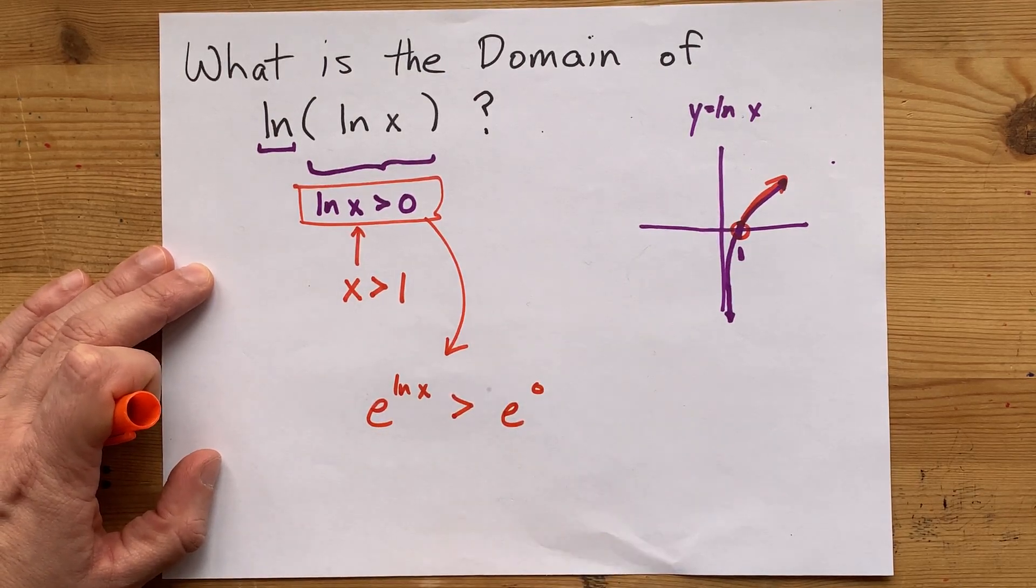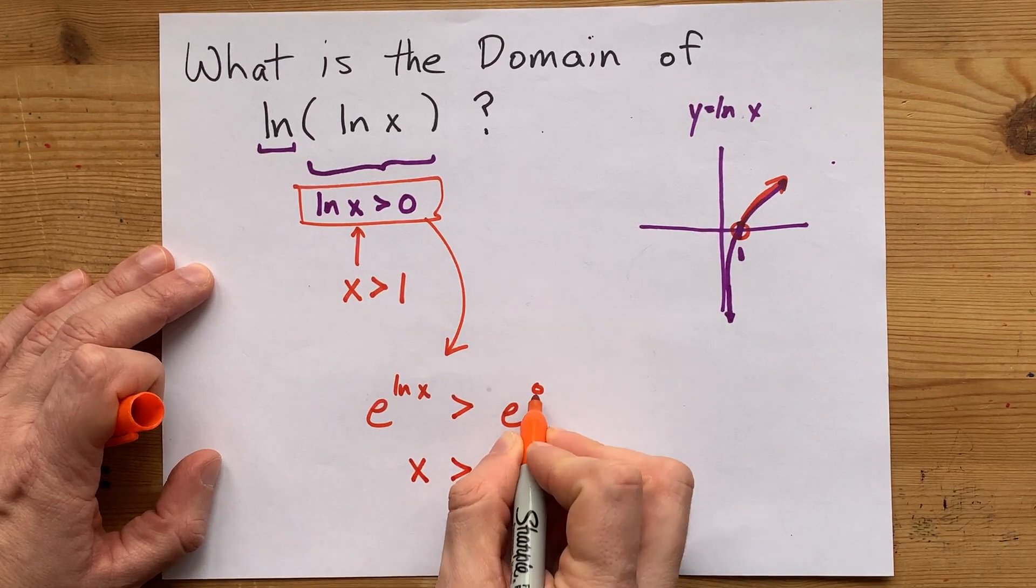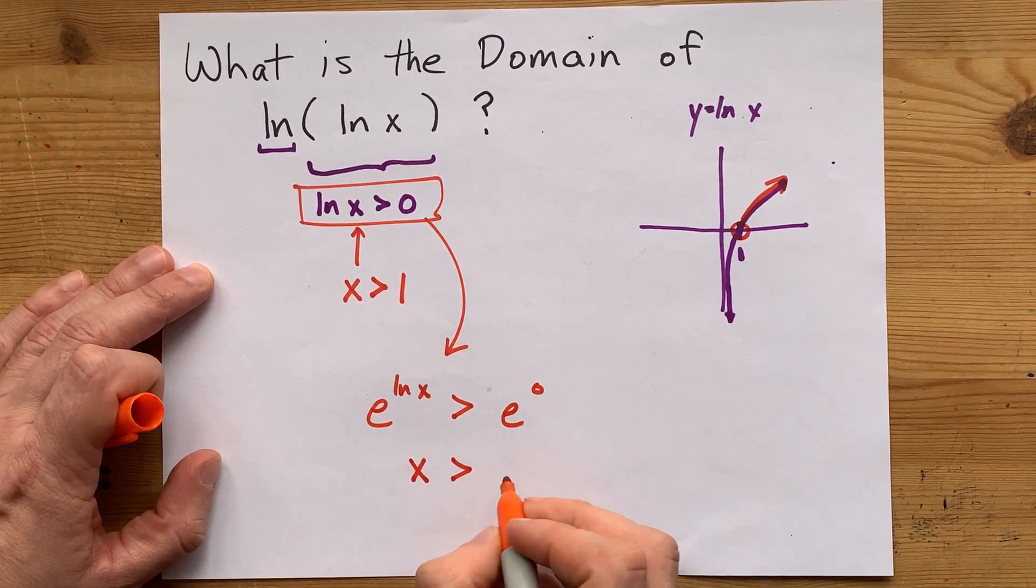e and ln cancel each other out, so that x is what's left here, and e to the 0, like anything to the 0, is 1.